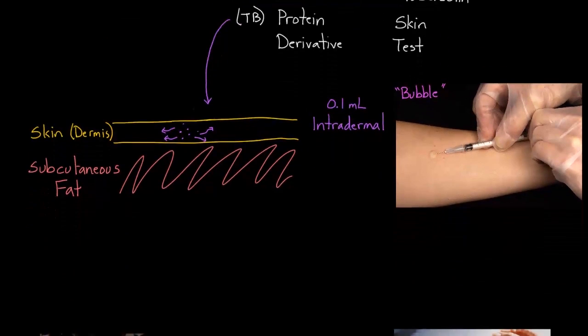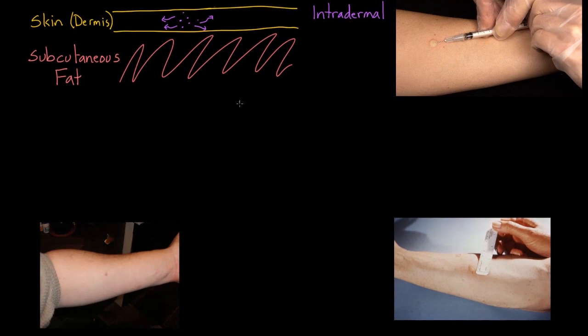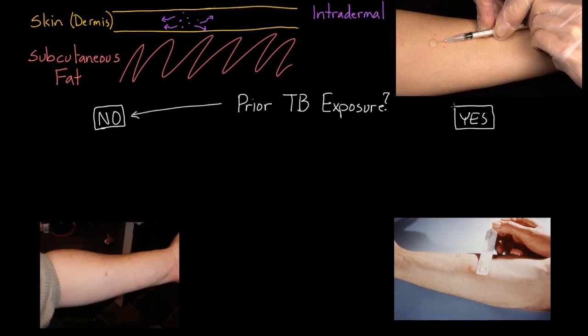So what are we hoping to accomplish with this test exactly? This test is going to help us answer the question of has the person had prior TB exposure. Just remember that. That's the question we're trying to answer - have they had prior TB exposure, yes or no? Let's think about what would happen in either scenario. This would be they have not had prior TB exposure, and on this side, let's talk about what would happen if they have had prior TB exposure.